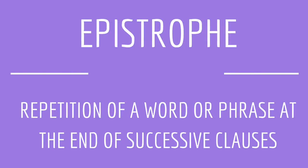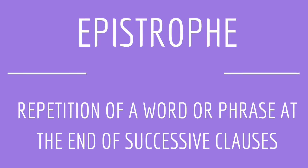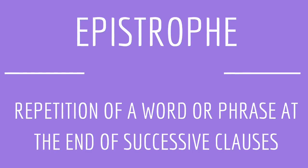Epistrophe is basically the opposite of anaphora because the repetition comes at the end of successive clauses. I personally find this significantly less common — I think we see anaphora much more. It's good to know what epistrophe is, but to be honest, it's not as common. I just think it's good to know that there is a phrase for the opposite of anaphora.